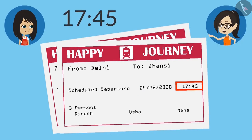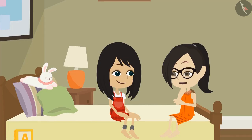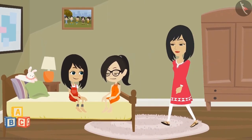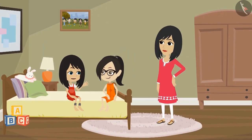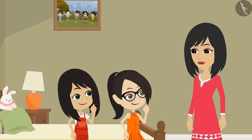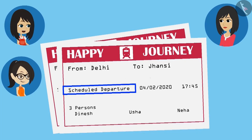It's not like normal time. See, the time is written as 45 minutes past 17. Yes, and AM or PM is also not written along with it. Yes, let's go and ask your mummy what is written here. Mummy, it's good you came — we want to ask you something. Tell me, what do you want to know? Mummy, this is our train ticket. It has 'scheduled departure' written on it. What does this mean?